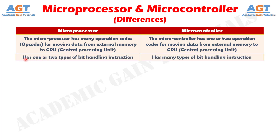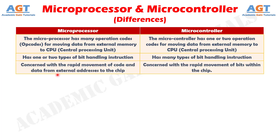Number 2: The microprocessor has one or two types of bit handling instruction, whereas the microcontroller has many types of bit handling instruction. Number 3: The microprocessor is concerned with the rapid movement of code and data from external addresses to the chip, whereas the microcontroller is concerned with the rapid movement of bits within the chip.